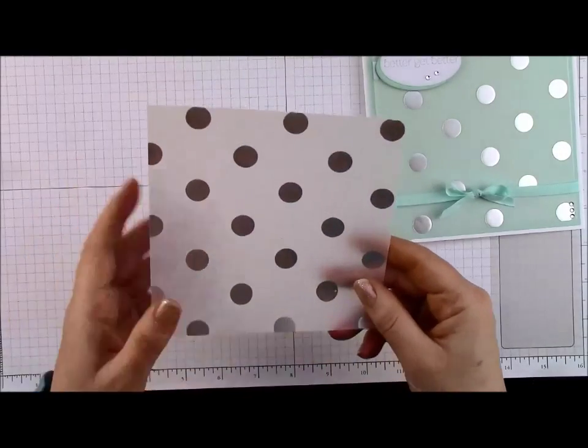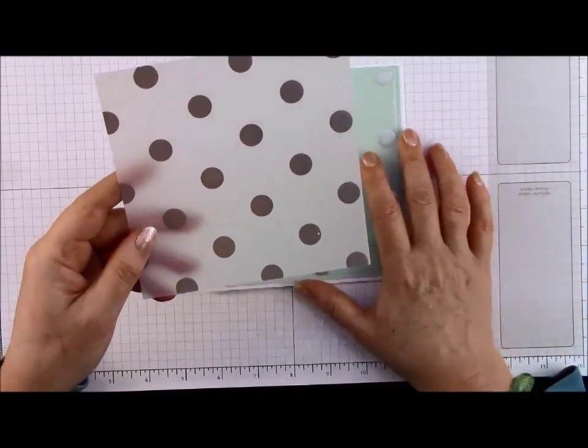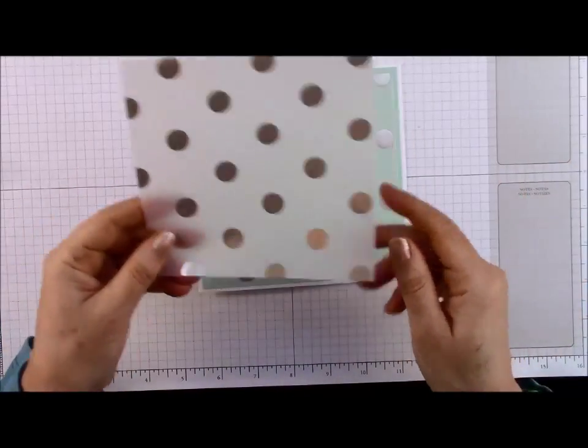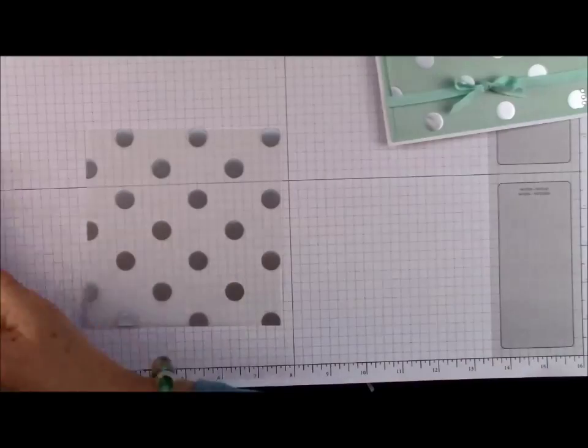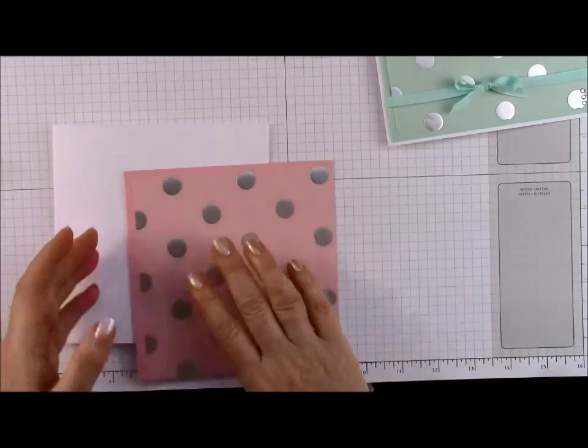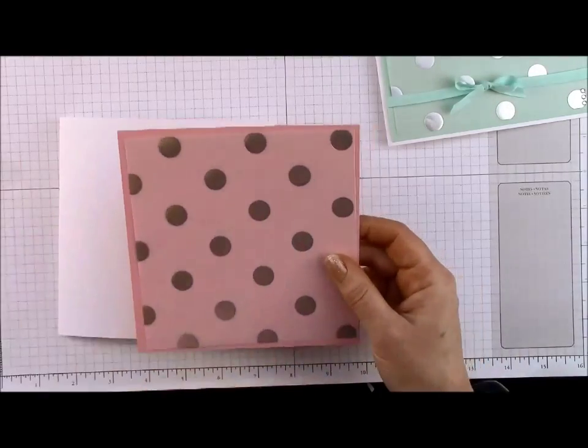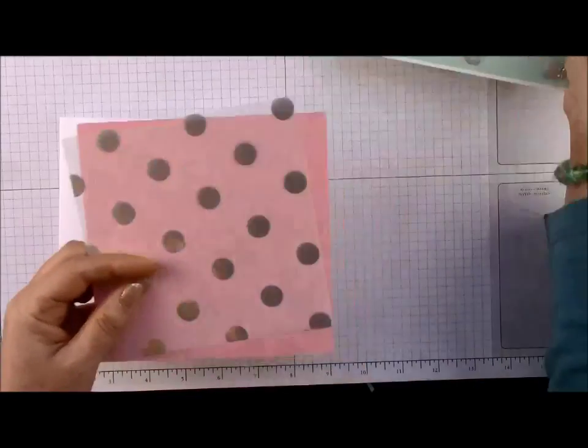Also, it comes in gold, so you can use silver or you can buy the gold one as well, if gold is your preferred color. So, what I'm going to do is I'm going to attach this to the card and then pop a ribbon on. You see I've got pool party ribbon there.